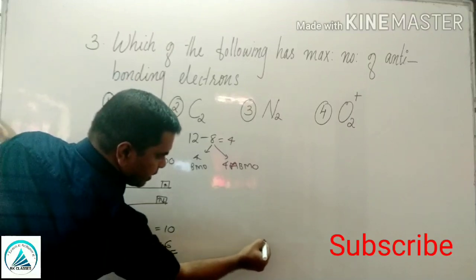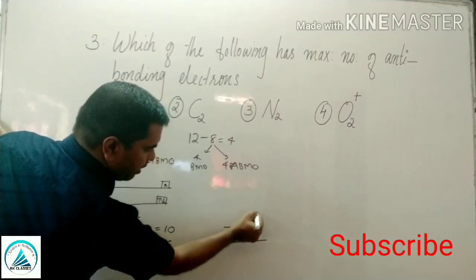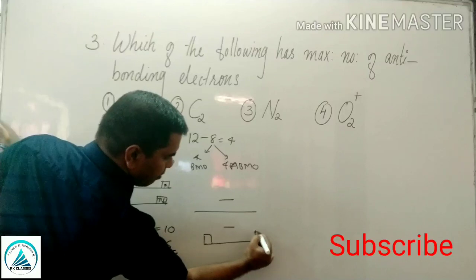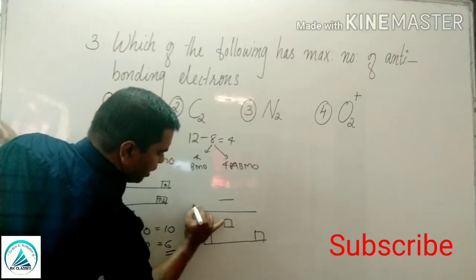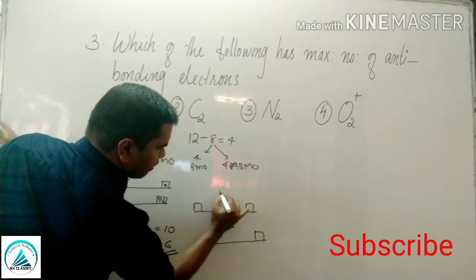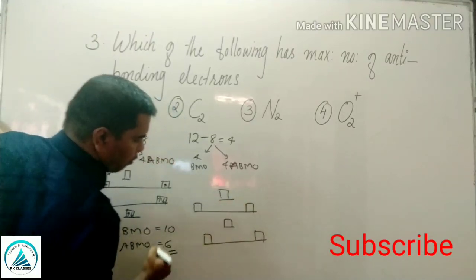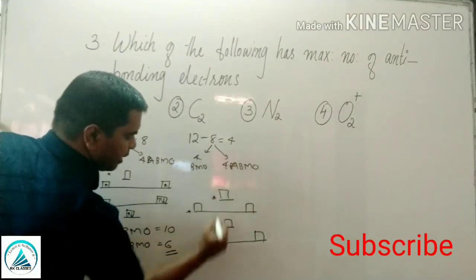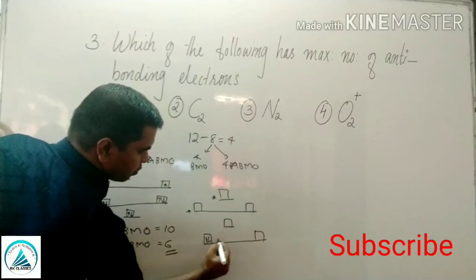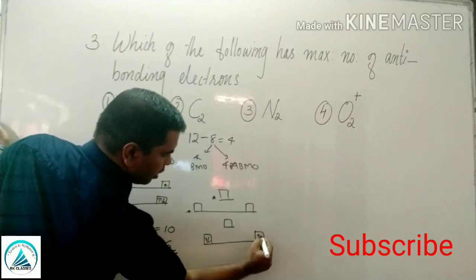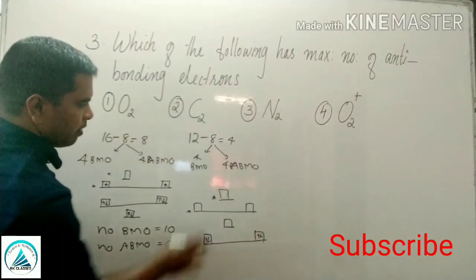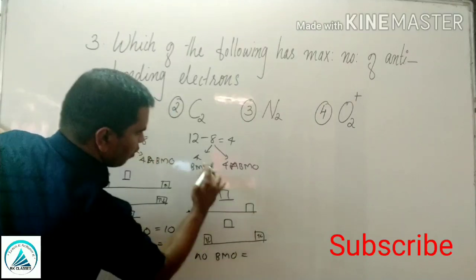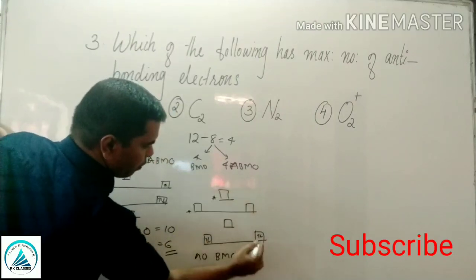For the less-than-14 pattern: 2 orbital big line, 1 orbital small line, 2 orbital big line, 1 orbital small line, 2 orbital big line, 1 orbital small line.